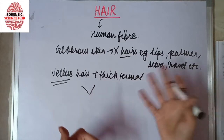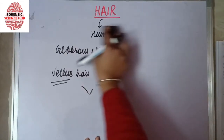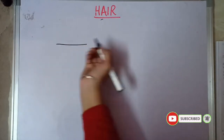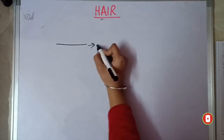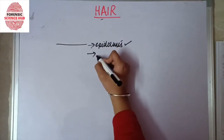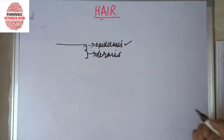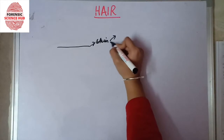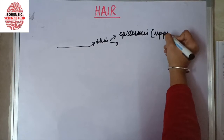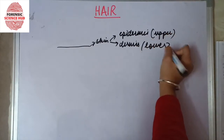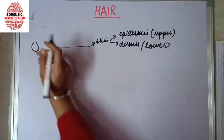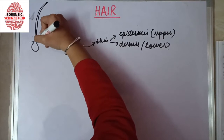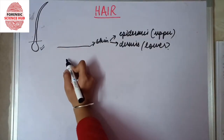Now talking about the two main portions of our skin: our skin is composed of many layers. The upper one is the epidermis and the lower one is the dermis layer. Our hair consists of two portions — some of it is embedded underneath our skin in the dermis region.